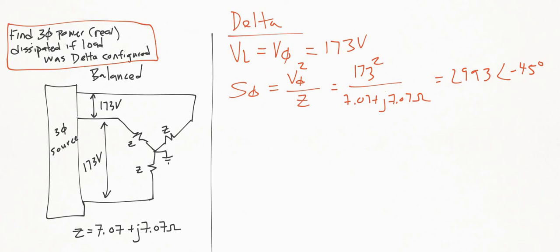The reason I put it into polar coordinates is because this is the apparent power for a single leg, and we want the real power dissipated. Remember that S is actually equal to the real power P plus the imaginary portion, which is the reactive power. We want just the real power here, so we're going to need this angle of -45° to get the power factor, which is the true power over the apparent power.